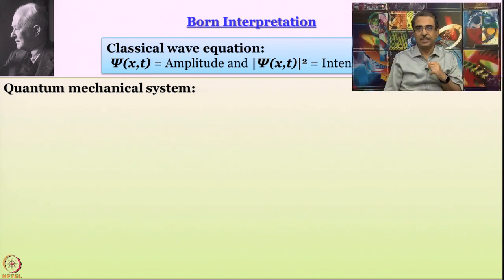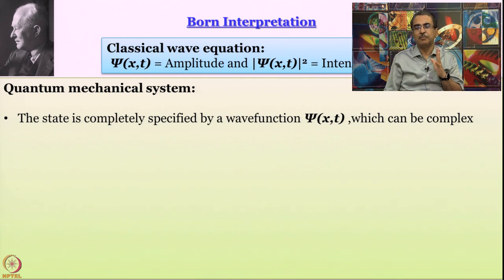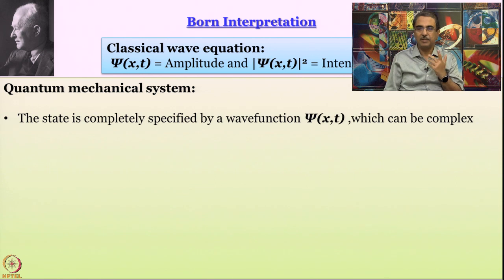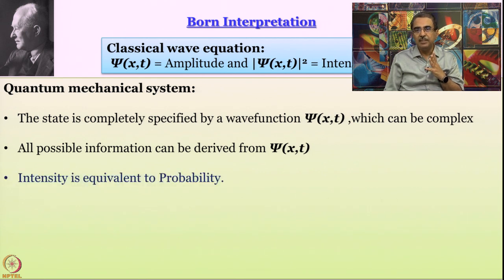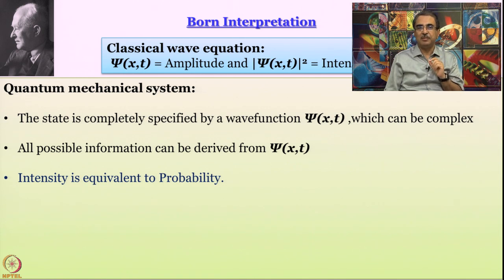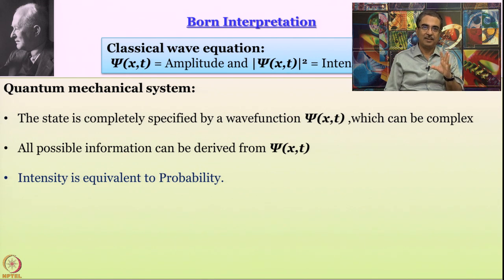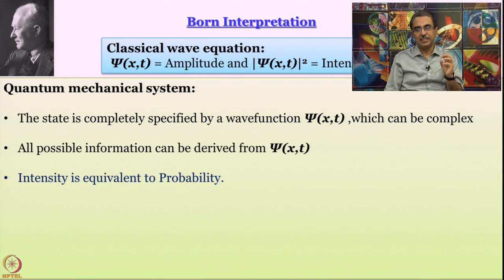Born started thinking along these lines: we have this wave function, which can be complex or real. It is great that all possible information can be derived from psi. But what is the meaning of intensity here? We are saying that psi is the amplitude of a matter wave. The intensity of a matter wave — Born realized — would be something to do with probability. If I look at some kind of a matter wave and in some region I see lots of intensity, and in some region I see less intensity, that essentially means that in the first region it is more probable to find the particle.